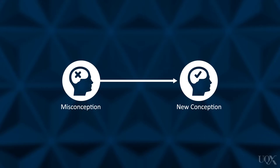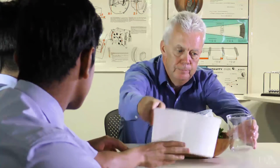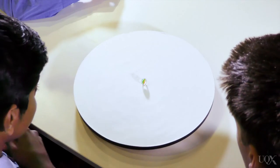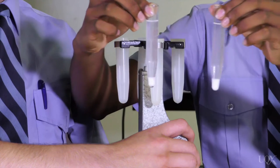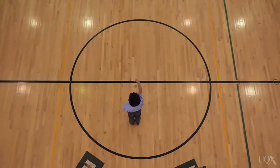Once engaged, the next stage is to generate internal dissatisfaction. Without dissatisfaction of a current conceptual understanding, it is not possible for you to move on. It is the teacher's role to present you with a conflicting or alternative idea that leads to a dissatisfaction with your current conception. Swinging the object on a string should cause internal dissatisfaction with the concept that an outward force was being applied.